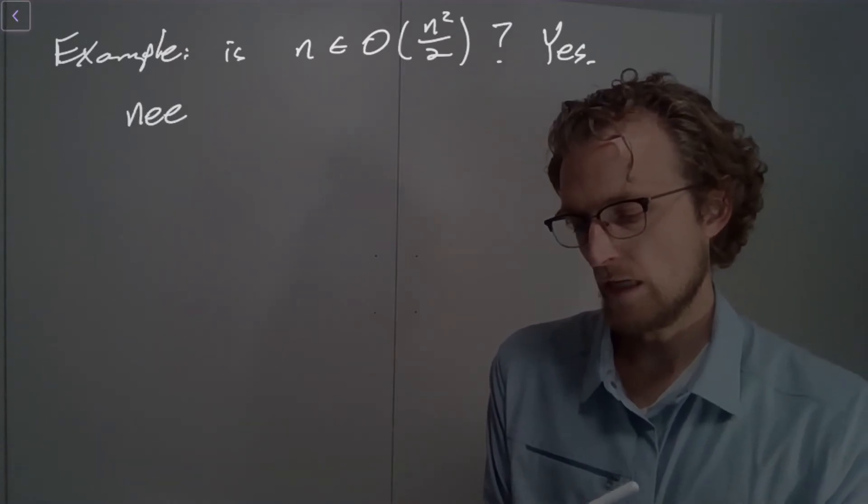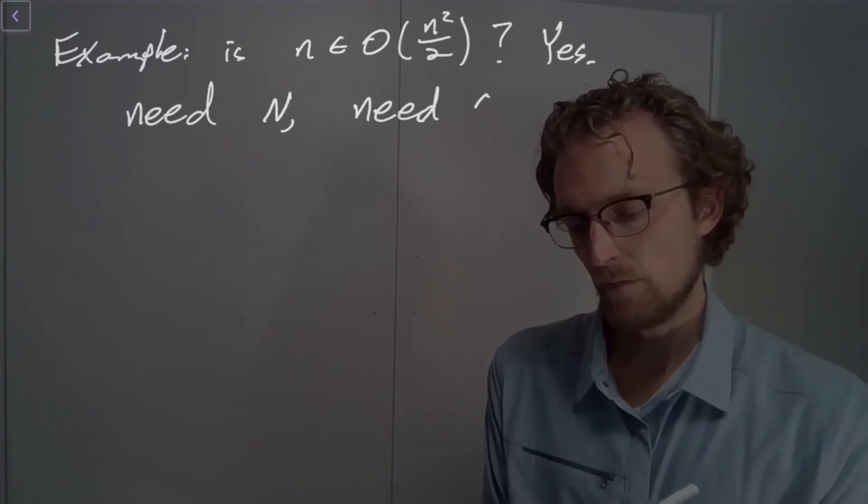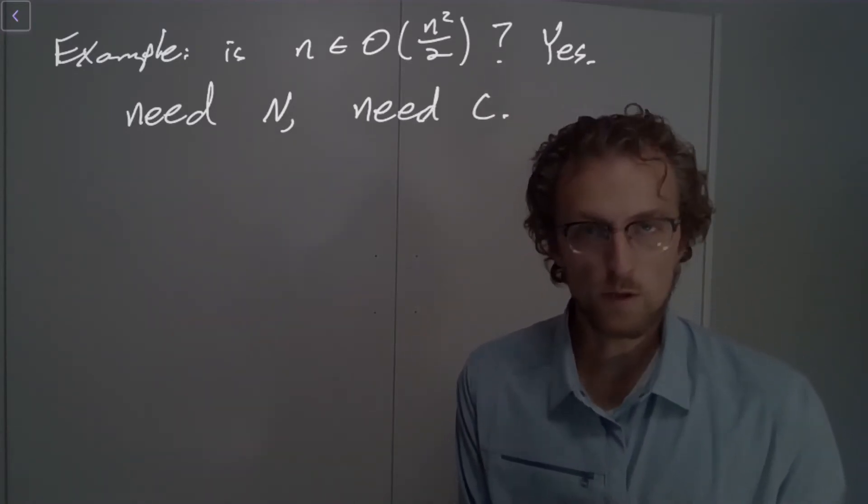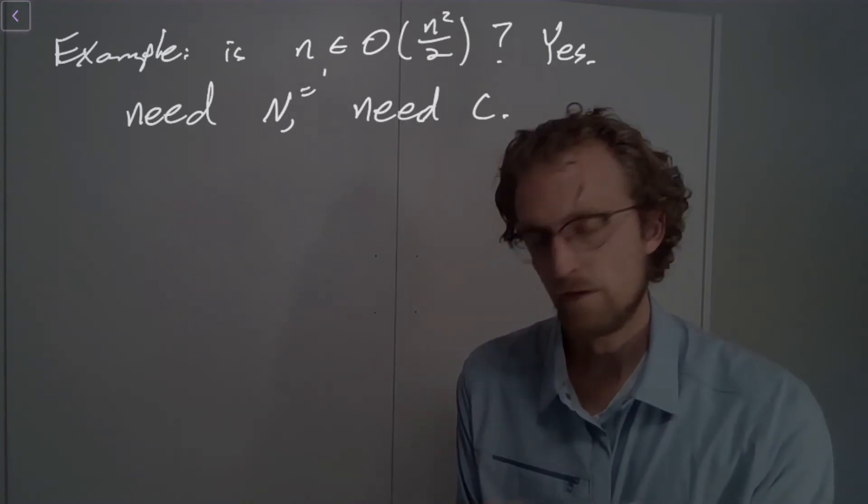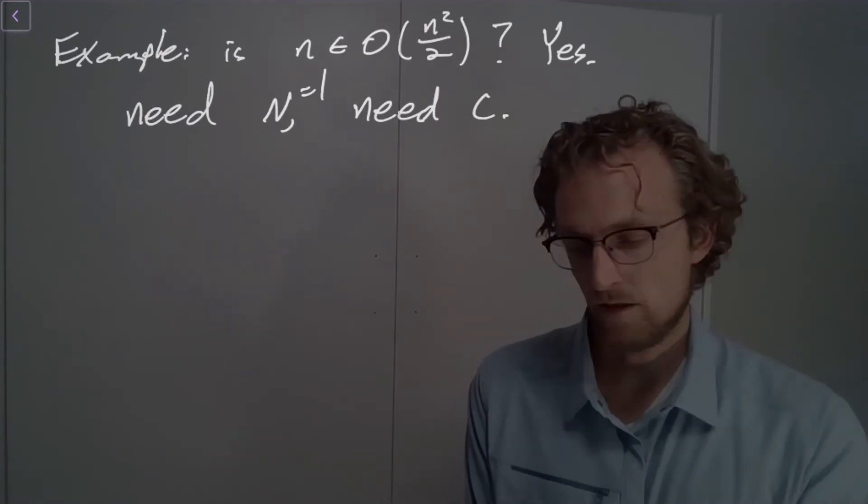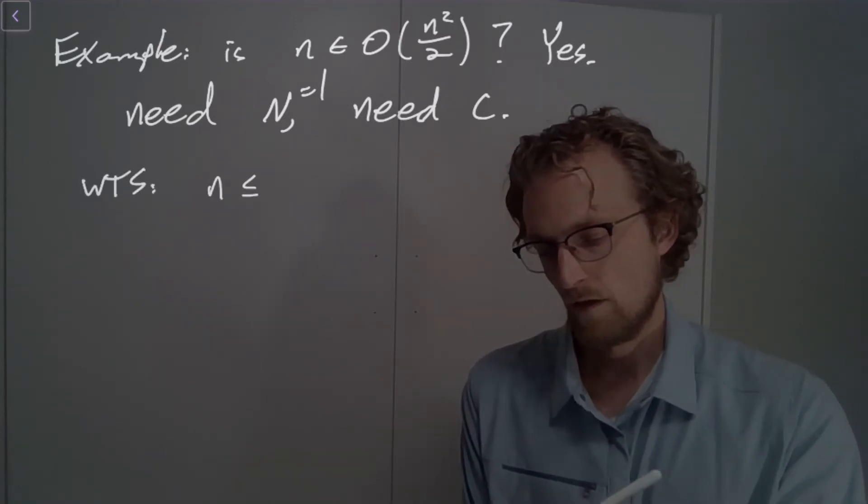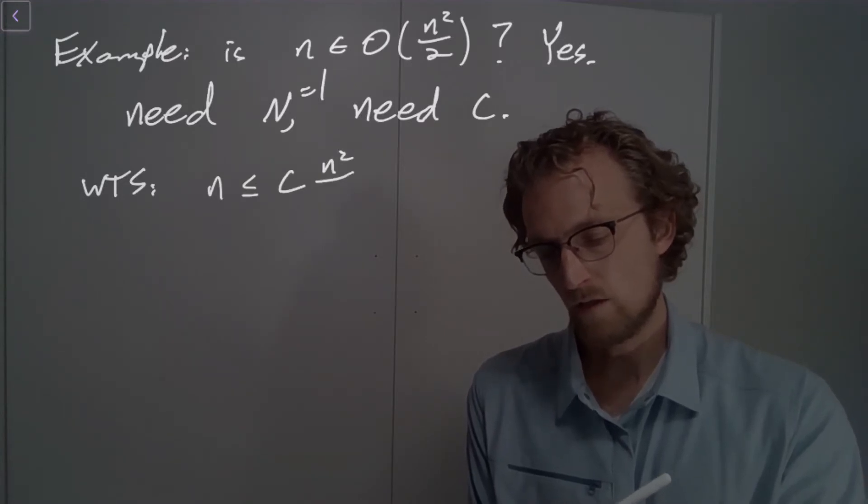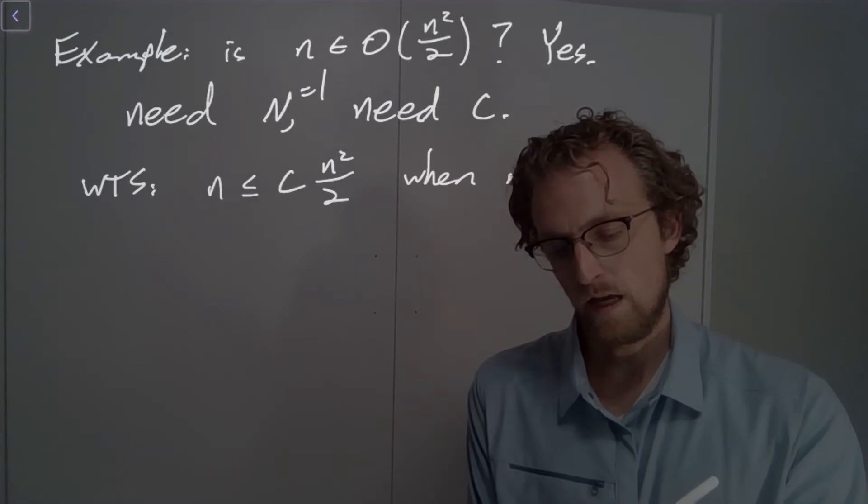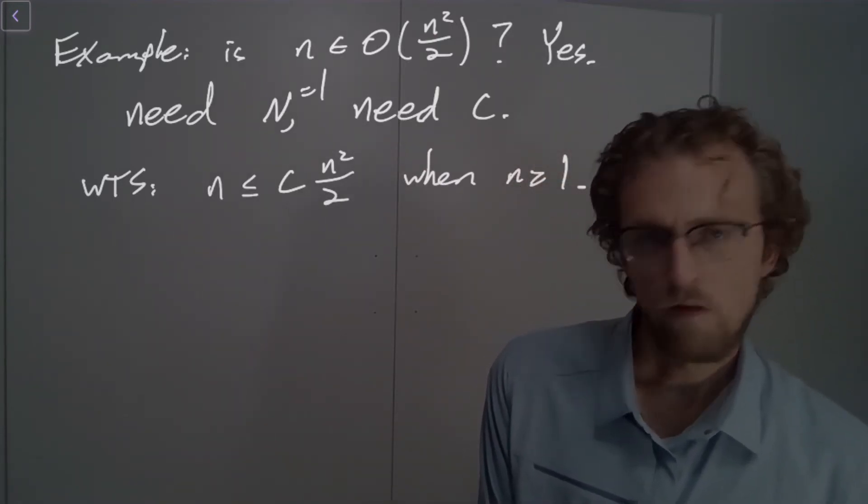So how do we show it? Well, we need an N, and we need a C. With this one, if we want to, we can just choose n equals 1. That's often the case. You can just choose n equals 1. And then make c as large as you need to make it to make the inequality true. And so, we want n to be less than or equal to c times n squared over 2, when n is greater than or equal to 1.